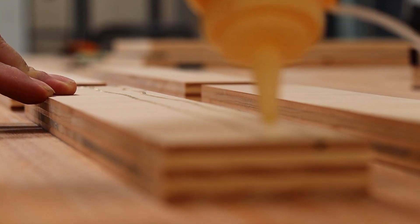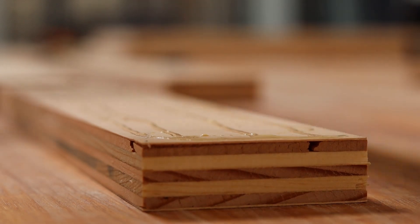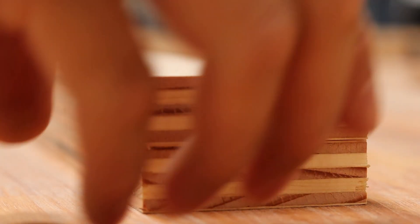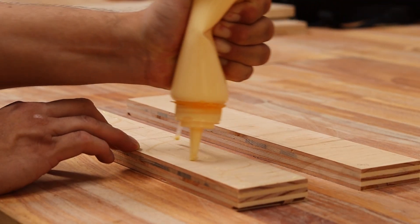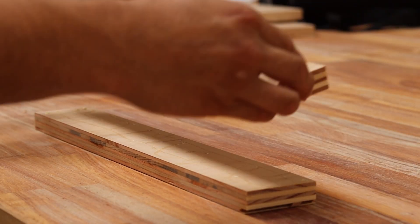To make the press legs, glue or nail gun two of the 2 inch by 15 and a half inch wooden bars from earlier. Repeat this step to complete the two press legs.